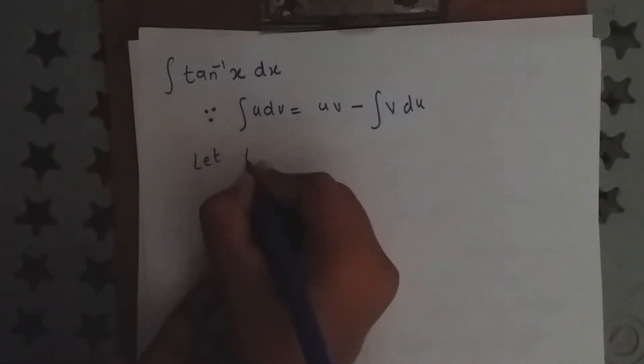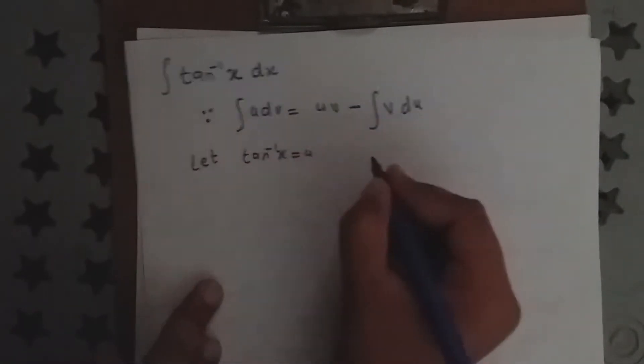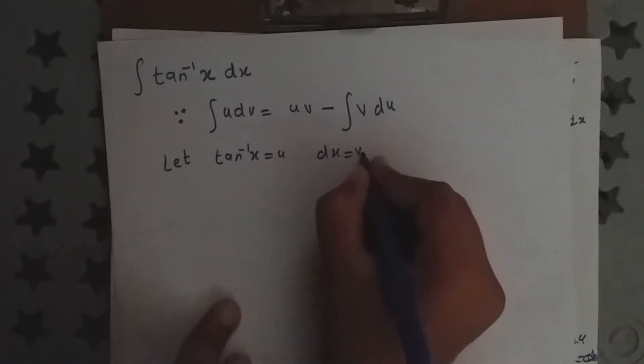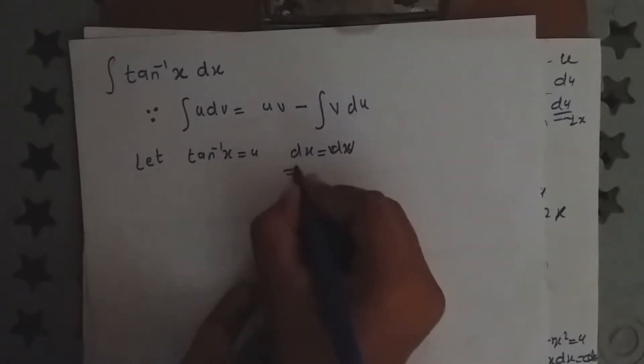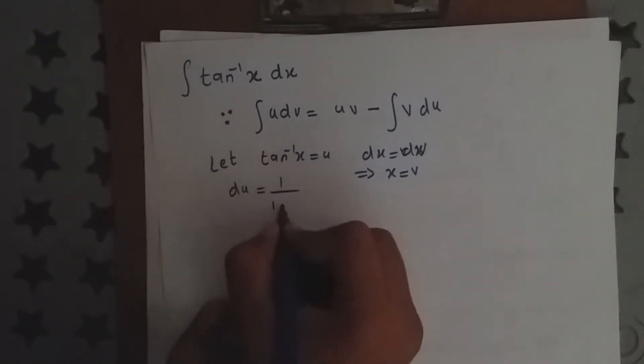Let tan inverse x equal u and dx equal dv. So x equals v, and du equals 1 over 1 plus x square dx.